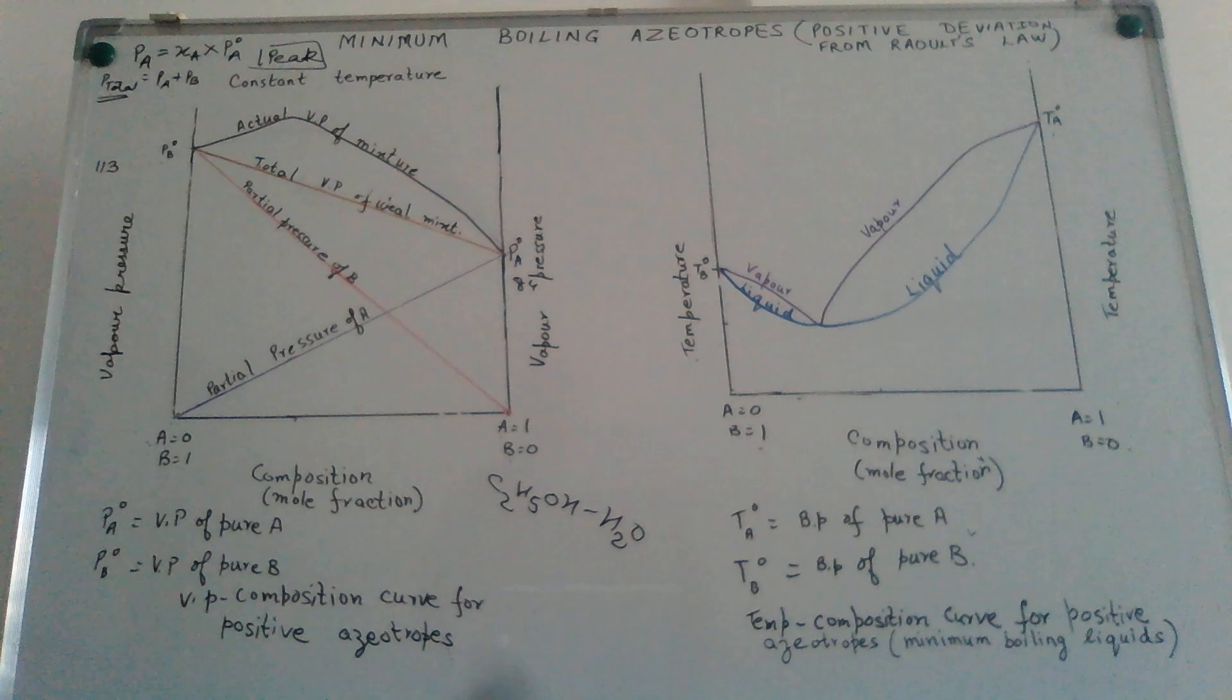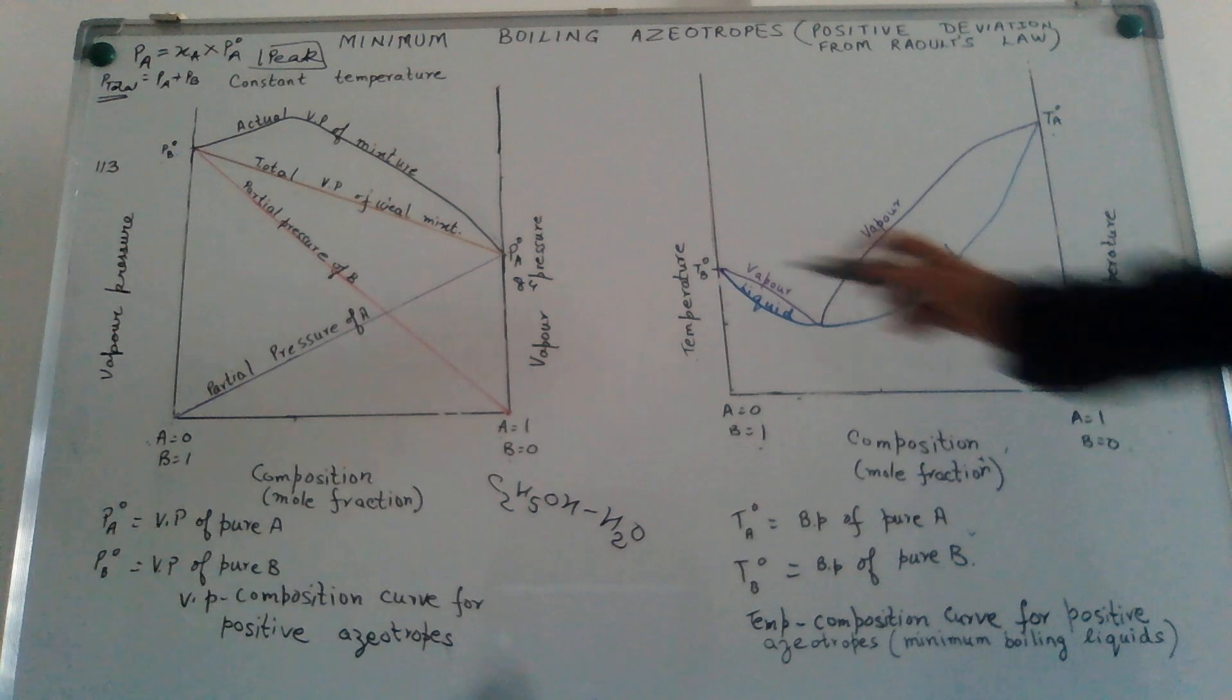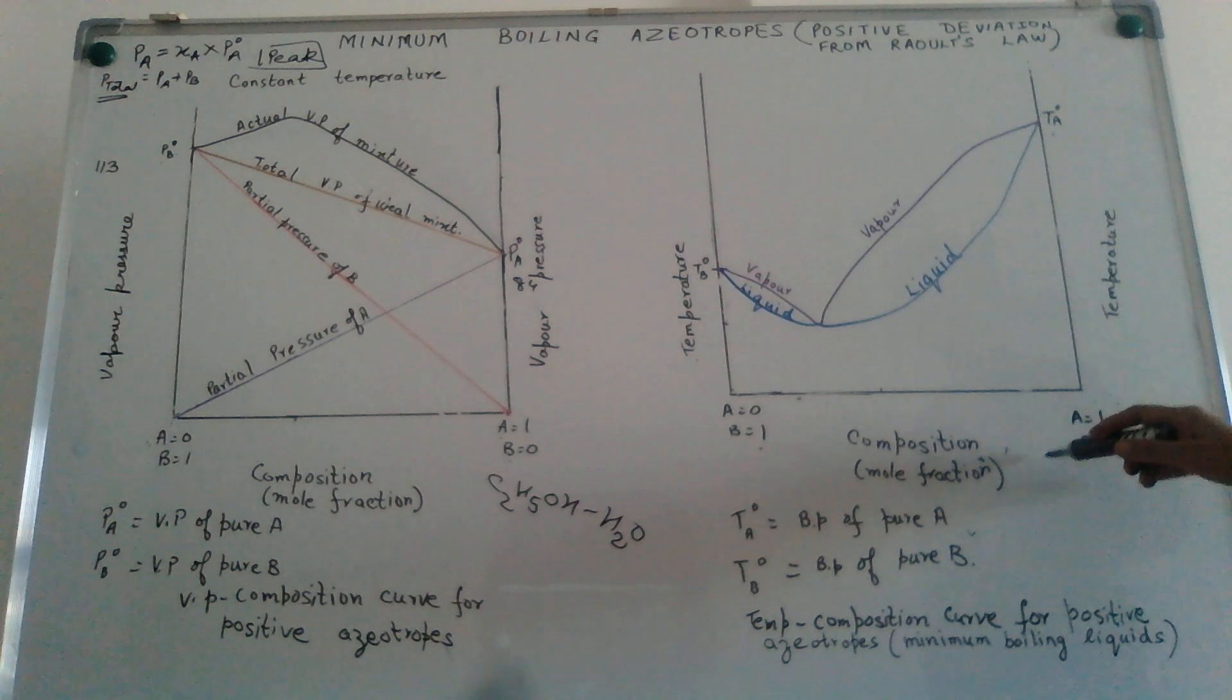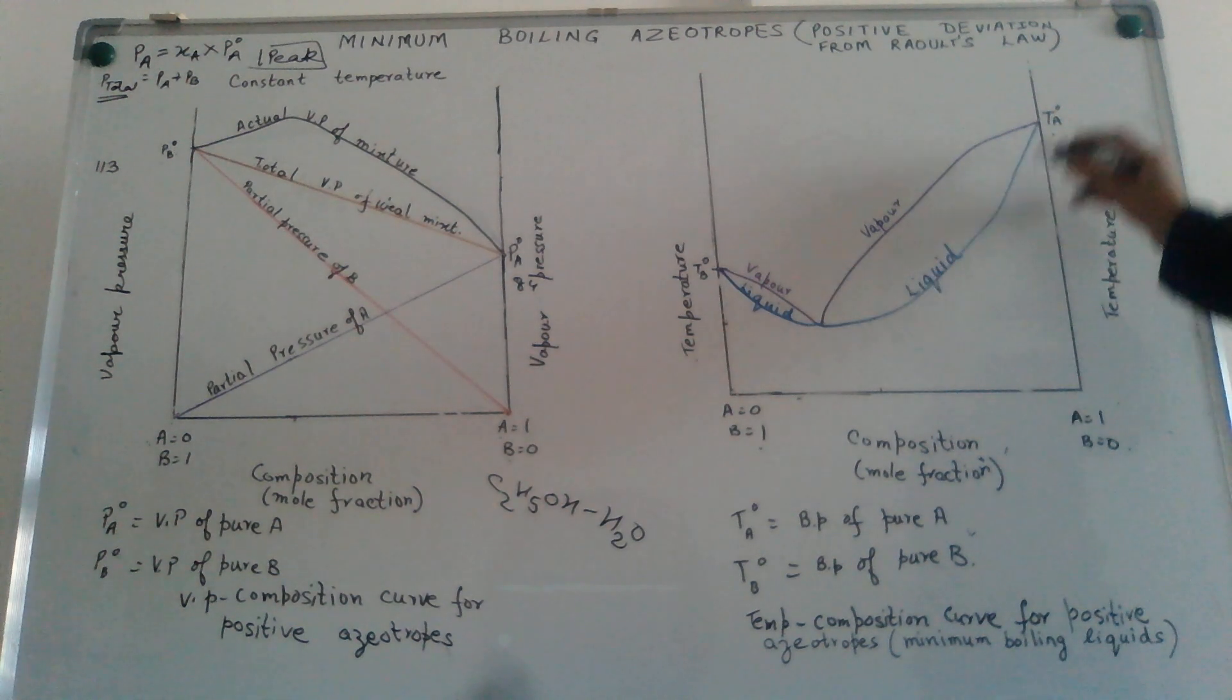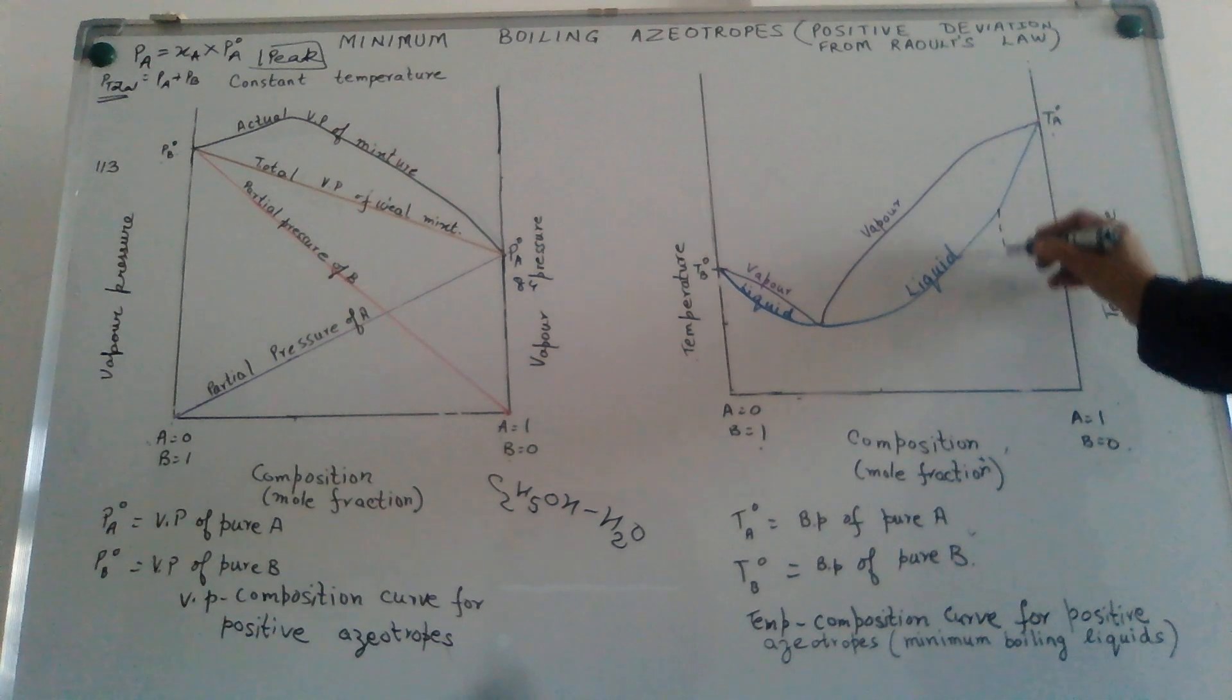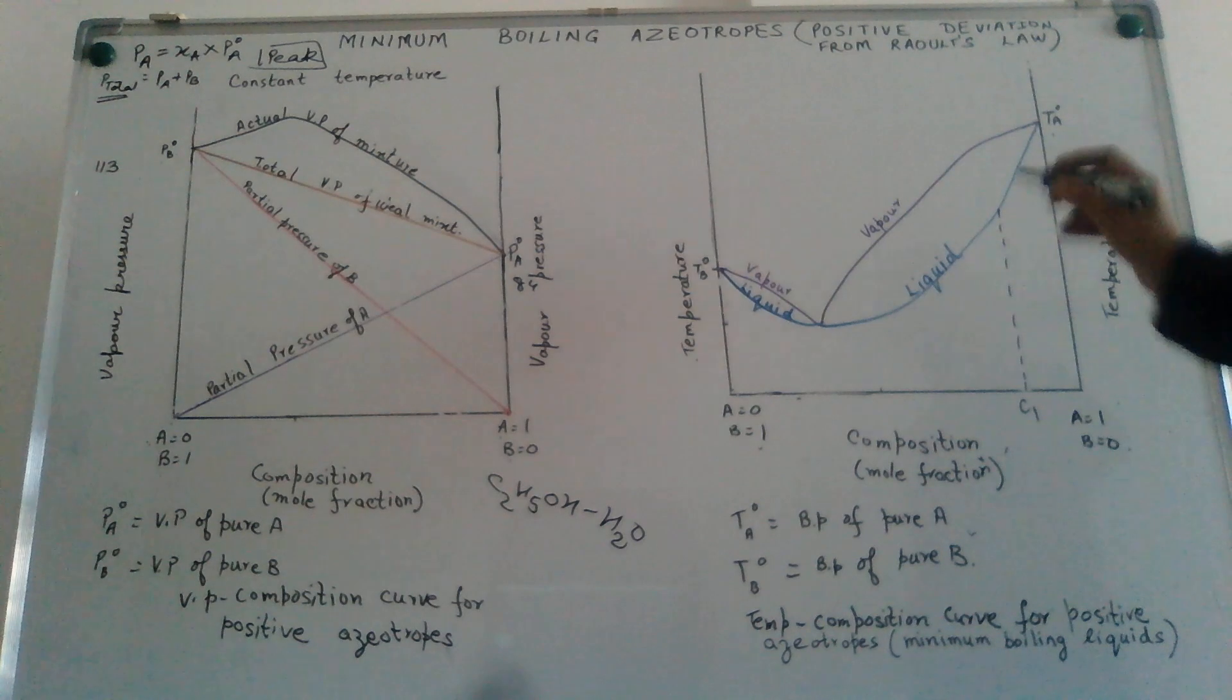So, when we draw the temperature composition curve, we have temperature on the y-axis and composition on the x-axis. We have the liquid composition, the liquid composition. There is a curve over here. When we take a liquid of, let us say, composition C1 here, we heat it.